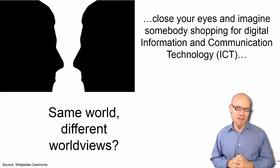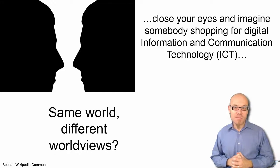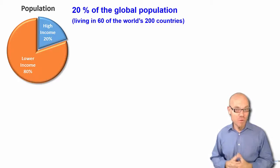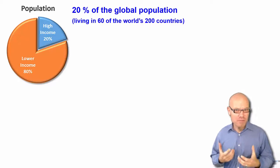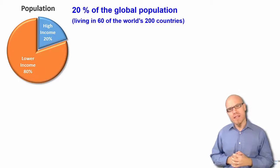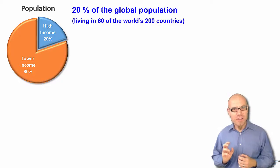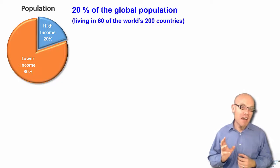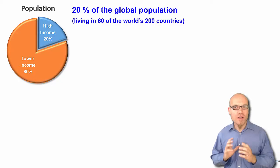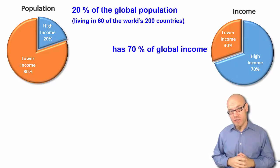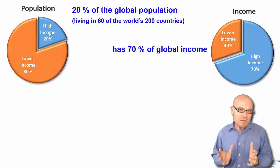This is especially important in the information age because in cyberspace, most people are extremely different than you. In cyberspace, most people are from the developing world — they are from poor countries. Worldwide, for example, 20% of the population live in the 60 most high-income countries, and these 20% have 70% of the world's income. So it's a very small percentage of people who live in developed countries that hold 70% of the income.